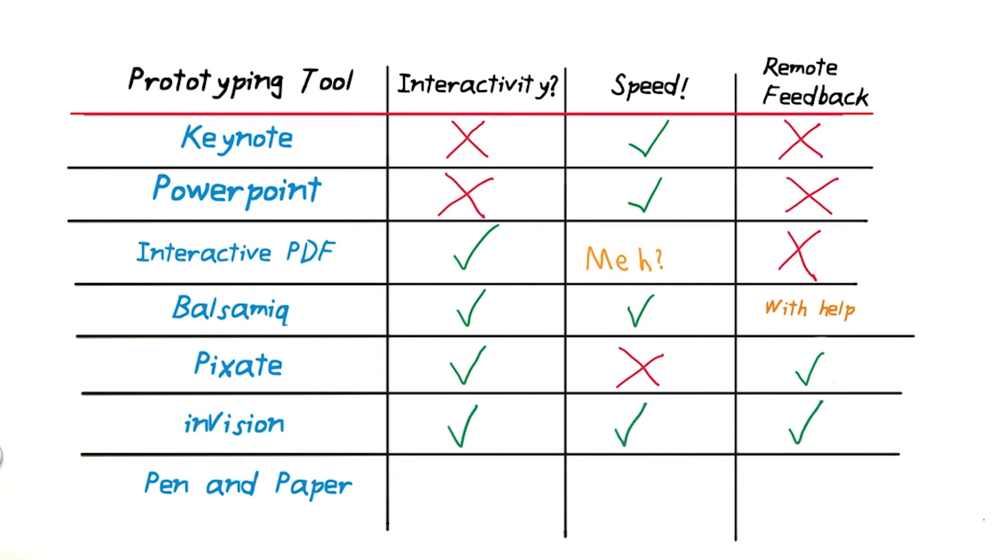InVision allows you to create interactive prototypes quickly, and has a couple of dedicated tools for getting remote feedback quickly and effectively. And finally, our old friend, the pen and paper, is super fast, but doesn't allow remote feedback, and it doesn't allow interactivity.